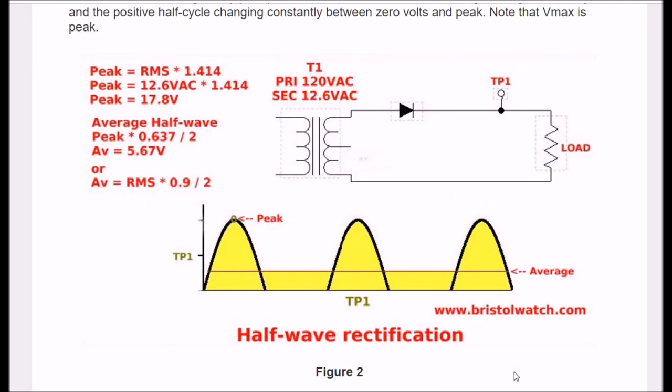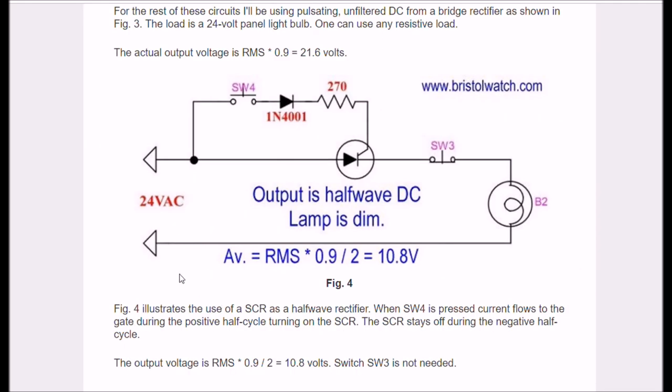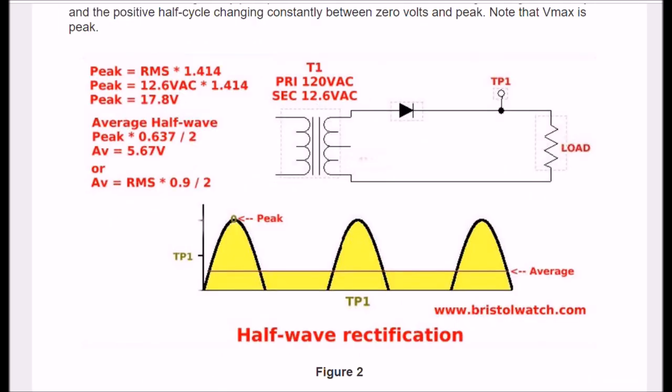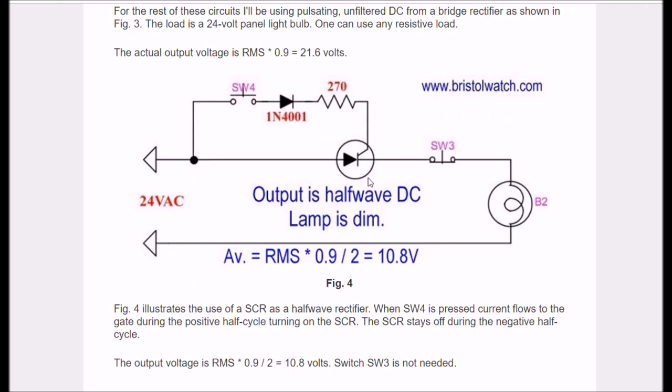Let's briefly look again at half wave rectification of an AC sine wave. Here is your single diode. There's your load. If you run an oscilloscope across the load, you'll only get the positive half cycle. The rest of it is nothing. And your average voltage, the formula is something like RMS times 0.9 divided by 2. In reality, the SCR circuit here does the same thing as this. It's a half wave rectifier, but with a difference. It only conducts when I press switch SW4.